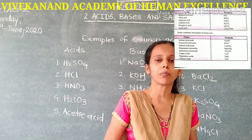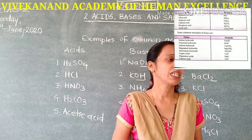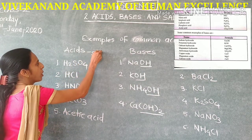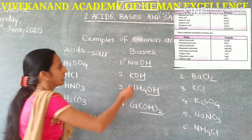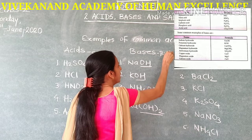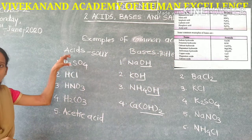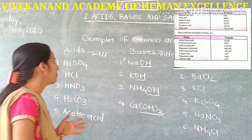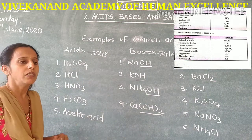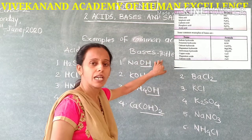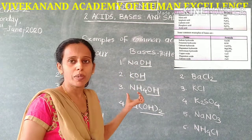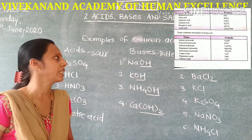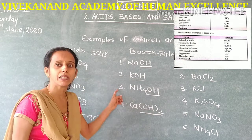The main general property of acid is it is sour in taste. General property of base is bitter taste. These acids are harmful to us — when we touch acid it may irritate our skin or the skin may burn. Bases are soapy in touch. These are common tests for the identification of acids and bases. Another chemical test is the litmus test.